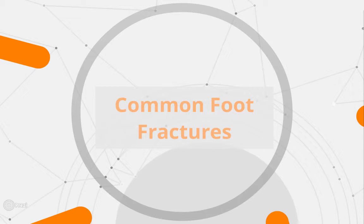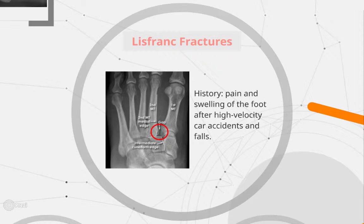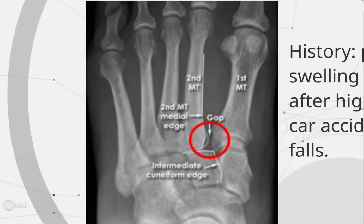Common foot fractures: Lisfranc fractures are rare but important not to miss — about 20 to 30% of these injuries are initially missed. The mechanism involves a twisting and crushing injury causing the foot to bend or twist at the midfoot-forefoot junction. It should be suspected in patients with pain and swelling of the foot following a high-velocity car accident or fall. On x-rays, assess the second and fourth metatarsals. Widening of the space between the first and second metatarsal bones is indicative of a Lisfranc fracture, and the medial edge of the second metatarsal should be in line with the medial edge of the intermediate cuneiform bone.